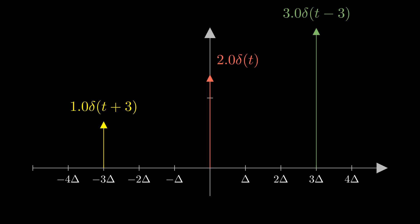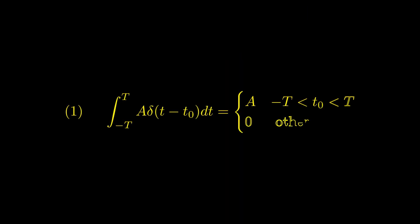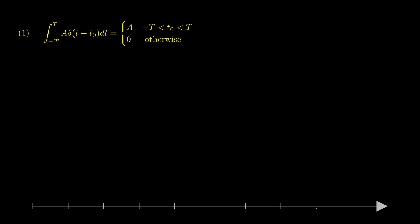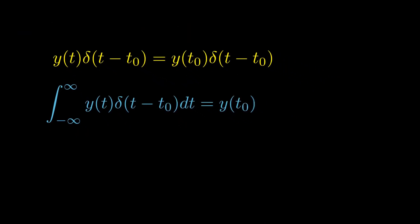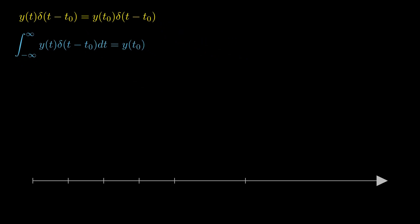The unit impulse function has a bunch of properties, but the most important are as follows: integrating a unit impulse function results in one, provided that the limits of integration include the impulse itself. Multiplication of an arbitrary function and an impulse function results in an impulse whose height equals the value of the function at the location of the impulse.